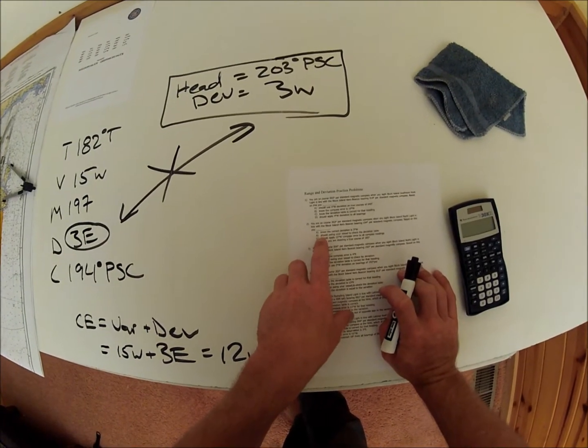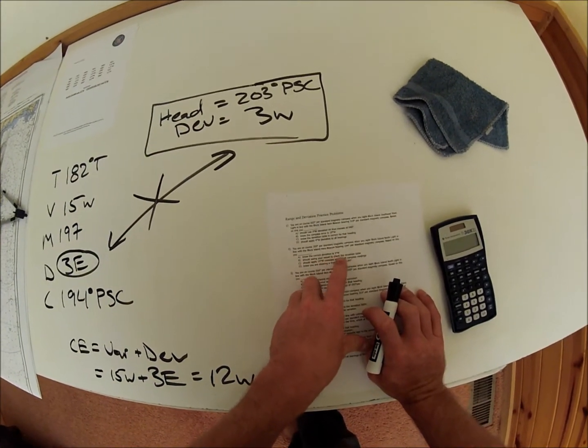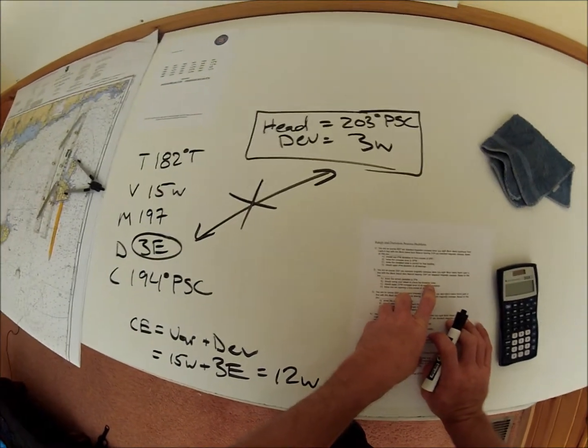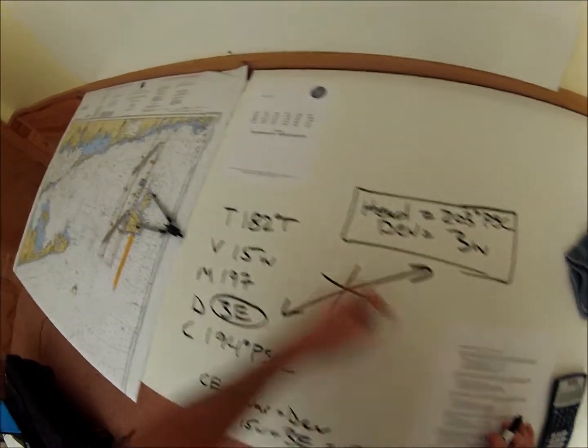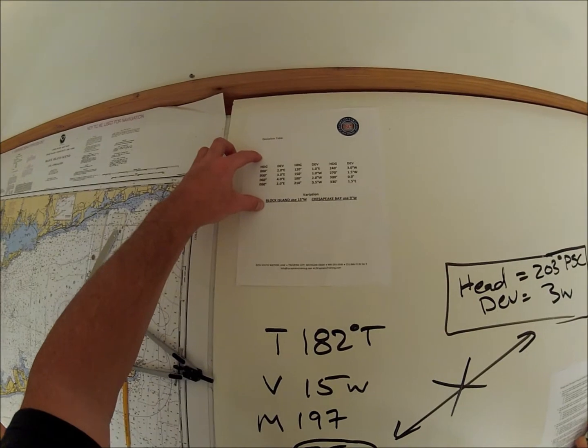So here's our correct answer. Should swing your vessel to check the deviation table. What this means is basically create another deviation table.